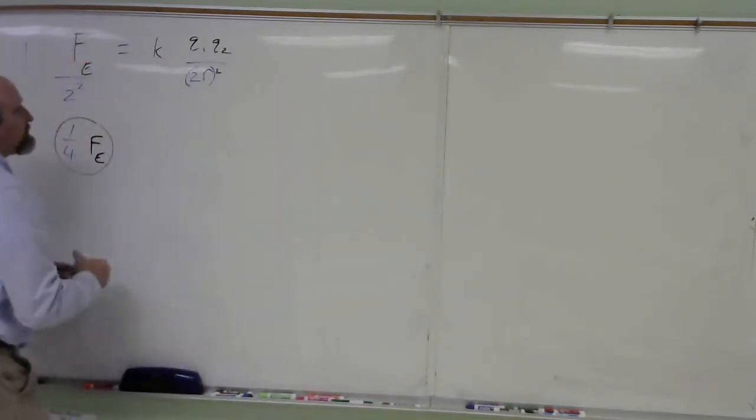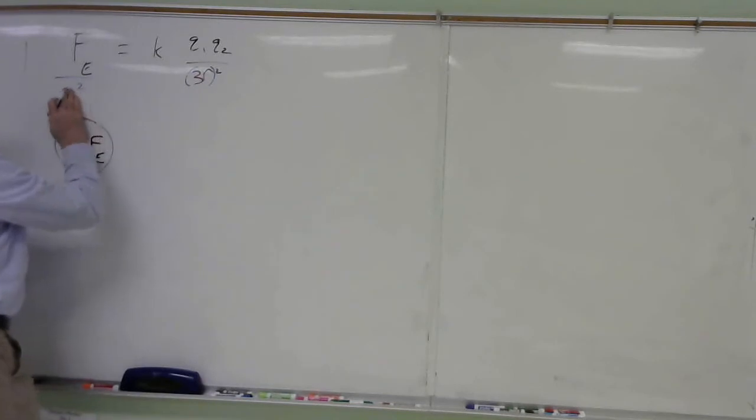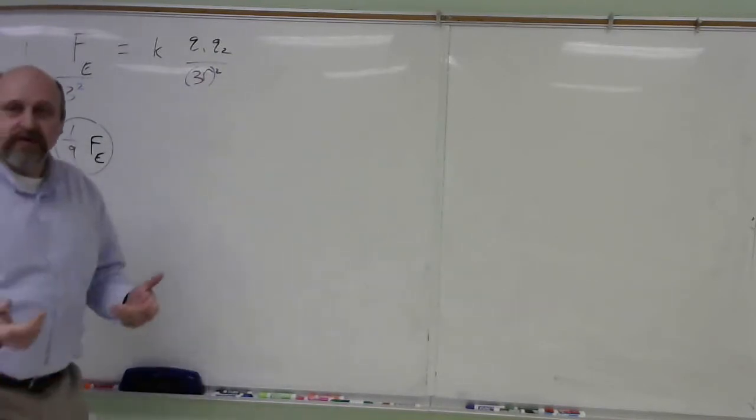Well, if I triple the distance between them, that is, I'm going to be squaring a number that's 3 times bigger, and so then to keep the sides equal, I've got to have a 3 squared in the denominator, and that, of course, would be 1 ninth force, and that's the way that works.